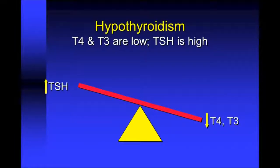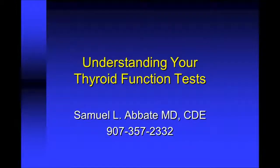Finally, in hypothyroidism, as the level of T4 and T3 in the bloodstream go down, the level of TSH goes up. The elevation of the TSH is an attempt by the pituitary gland to signal the thyroid to increase its production of thyroid hormone to make up for the low levels it senses in the blood. I hope this brief overview of thyroid function tests has been helpful. If you have any questions, please feel free to contact our office at the number on the screen. Thank you very much.